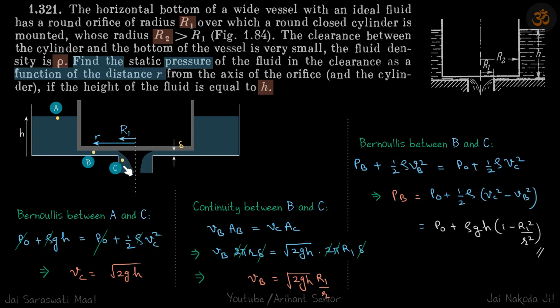First, let's find the velocity of efflux at point C. We'll use Bernoulli at point A and C. So p0 + ρgh = p0 + ½ρvc². This gives vc = √2gh, just like a normal efflux. So we have found the velocity here.